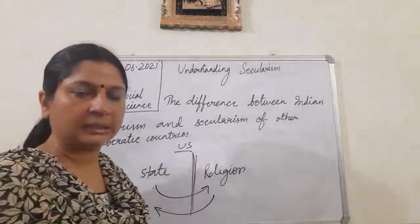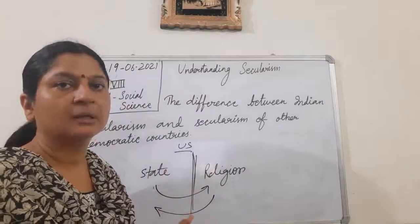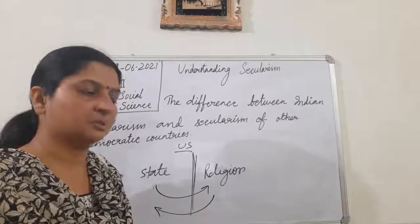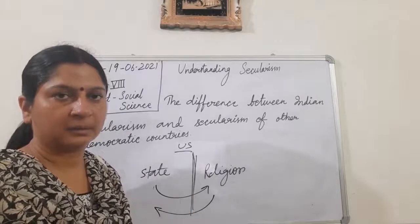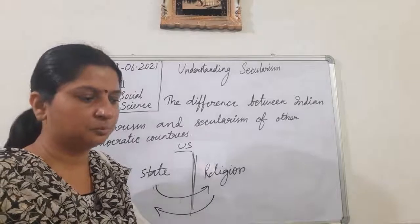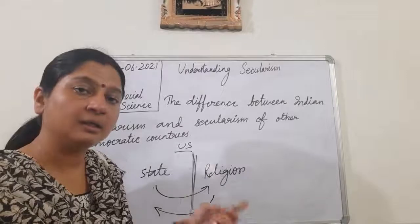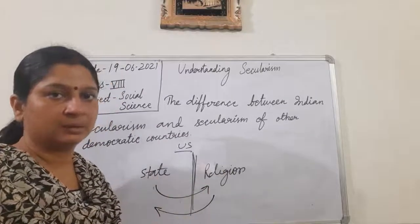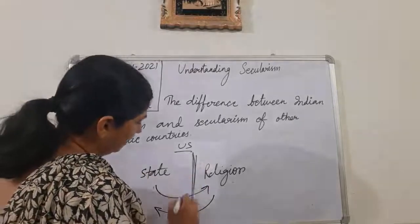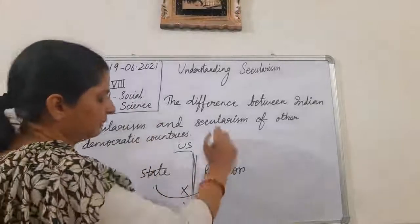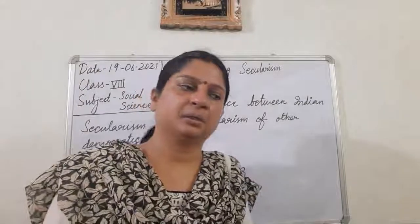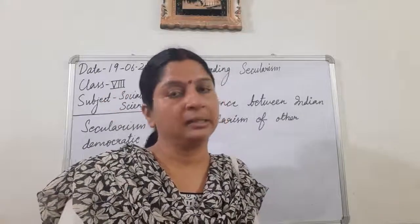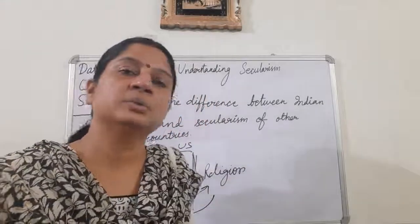In India we have seen that the state can interfere in matters of religion — such as abolishing untouchability, changing the inheritance system, and banning Triple Talaq. Also, religious minorities have been given the right to set up their own educational institutions and the state will give them financial aid. But if we look at Western countries, this kind of intervention or support would not be permitted.